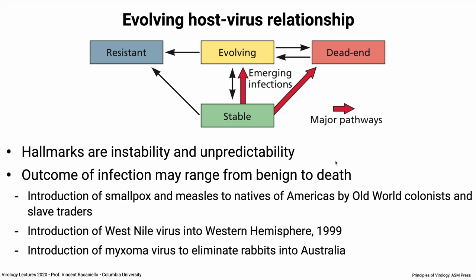The evolving host-virus relationship, shown in yellow, is characterized by instability and unpredictability. You can go from stable to evolving, and the outcome can range from benign to death. Examples: smallpox and measles introduced to Native Americans by Old World colonists and slave traders wiped them out because they had never seen it before — zero population immunity. West Nile coming to the Western Hemisphere in 1999 was highly evolving and unstable until it spread across the country. The introduction of myxoma virus to eliminate rabbits in Australia showed very different outcomes in the first year versus subsequent years.